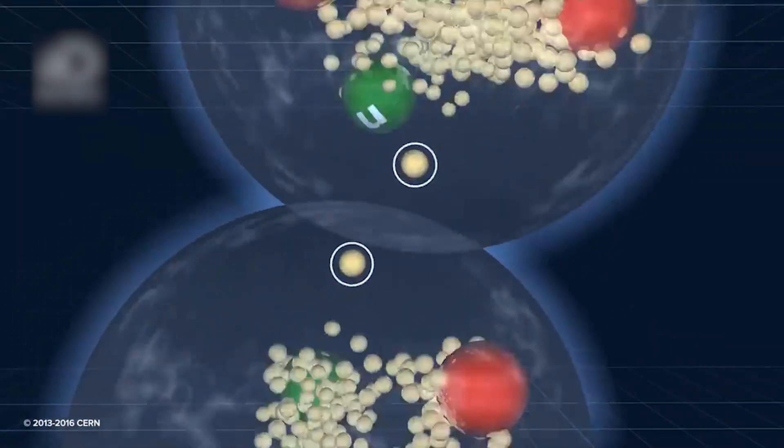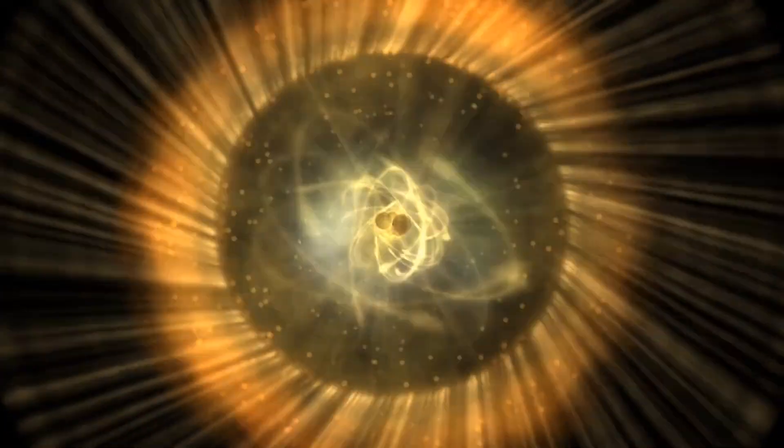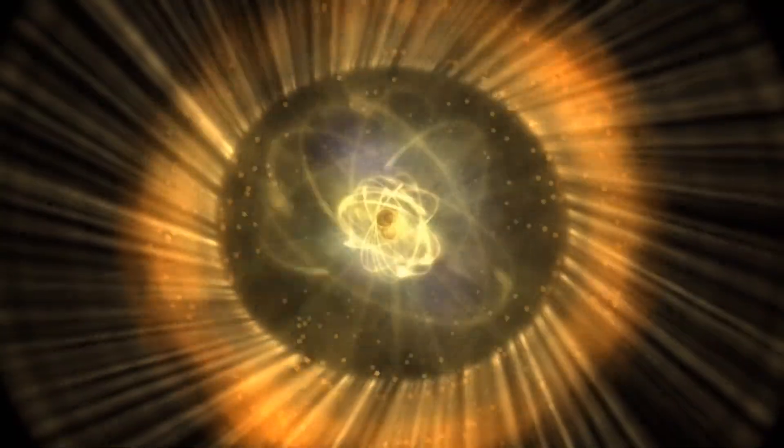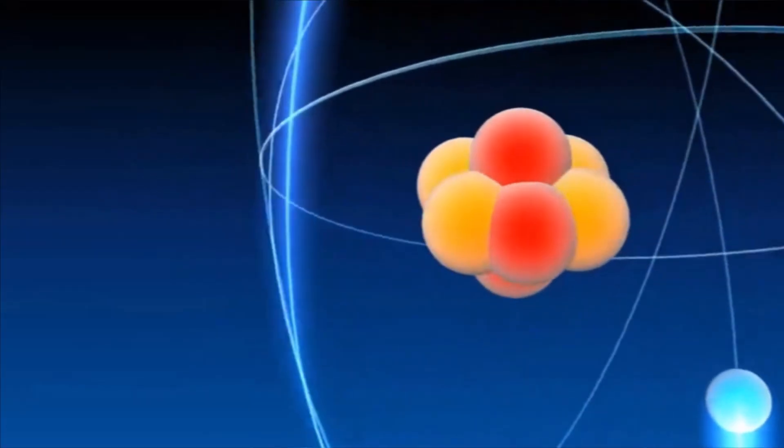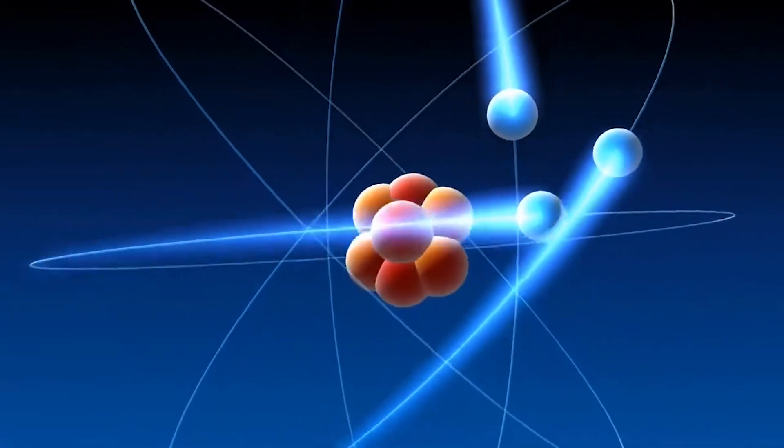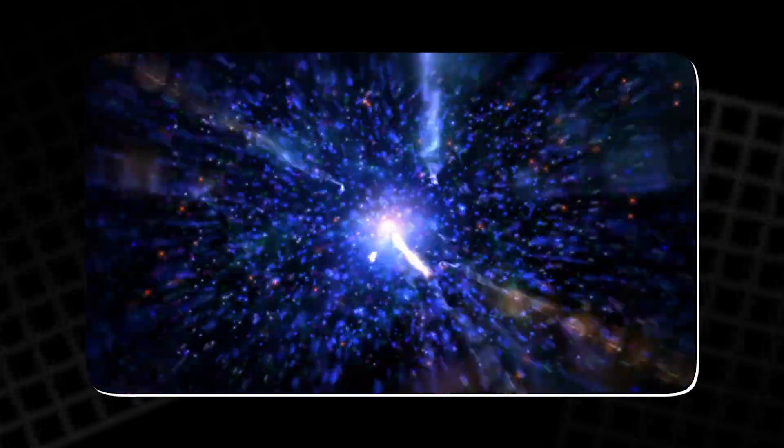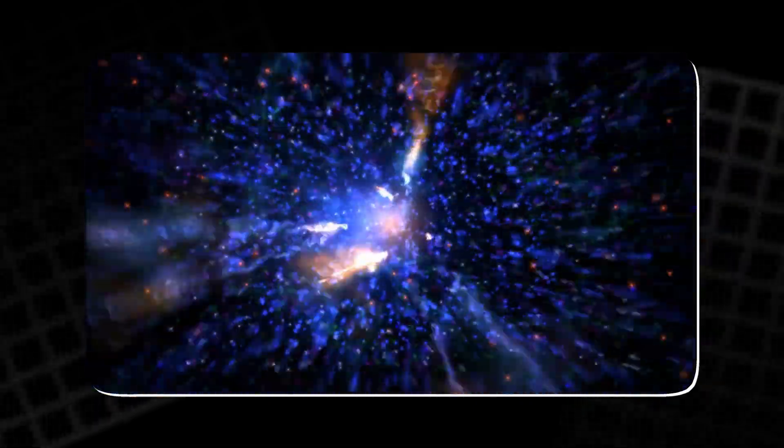But this is a temporary condition. Electrons cannot remain in a higher energy state for long because it is unstable. They soon fall back down to their original orbital, releasing the absorbed energy in the form of light particles known as photons.